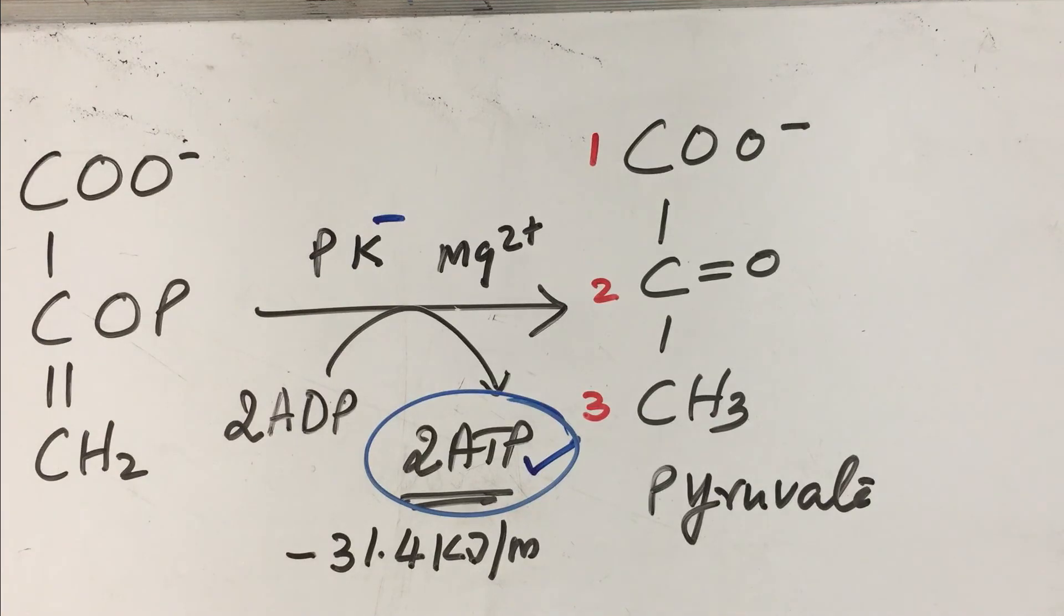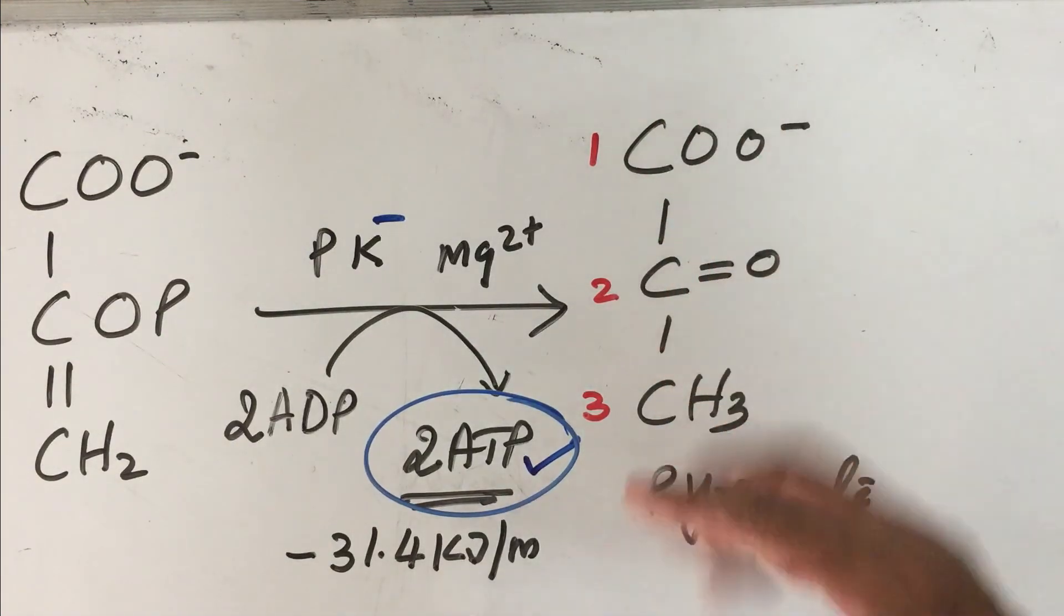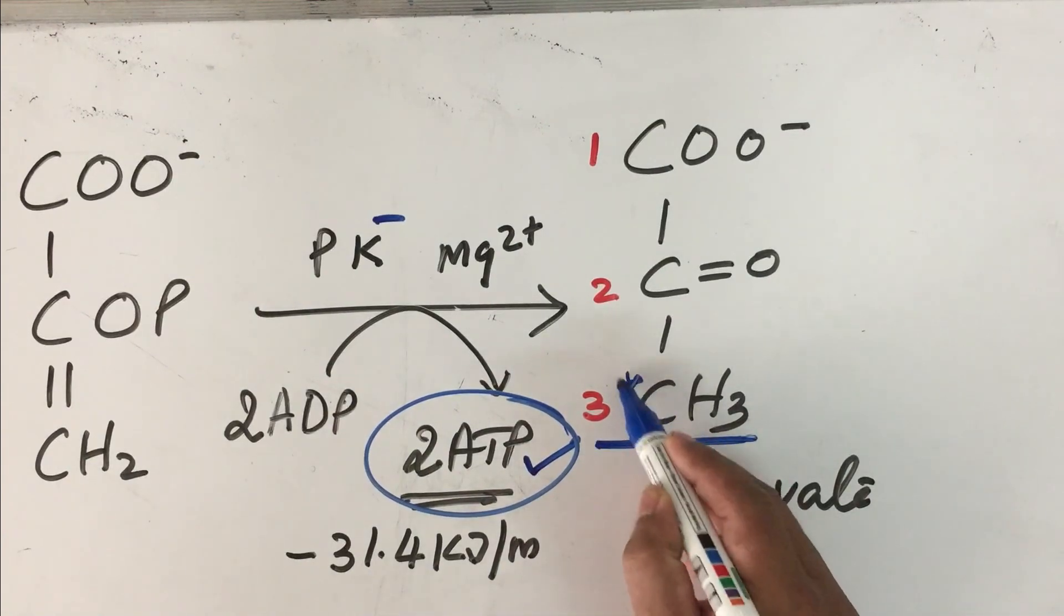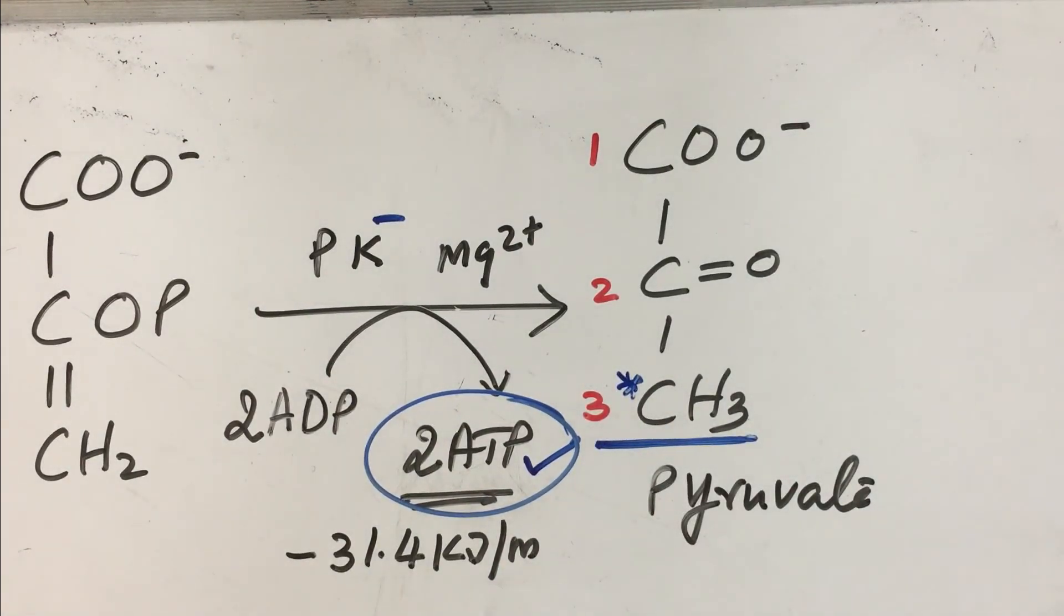Also important to notice: remember we radiolabeled carbon number 1. In reaction number 5, we folded that back, so this becomes our carbon number 1, our radiolabeled carbon. Keep that in mind. This will be useful in future sessions, maybe in TCA cycle, we will use the fate of carbon.